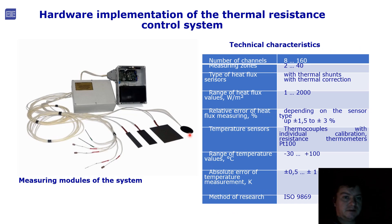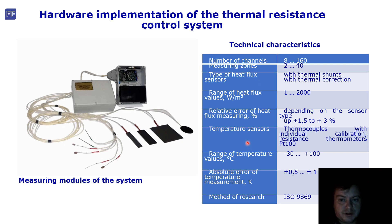On the slide is presented the hardware implementation of the thermal resistance control system. Each module has eight channels and can be expanded to a maximum of 160 channels, with temperature sensors providing from two up to 40 measurement zones. The system uses corresponding heat flux sensors and temperature sensors — two types of thermopiles with individual calibration and resistance thermometers.